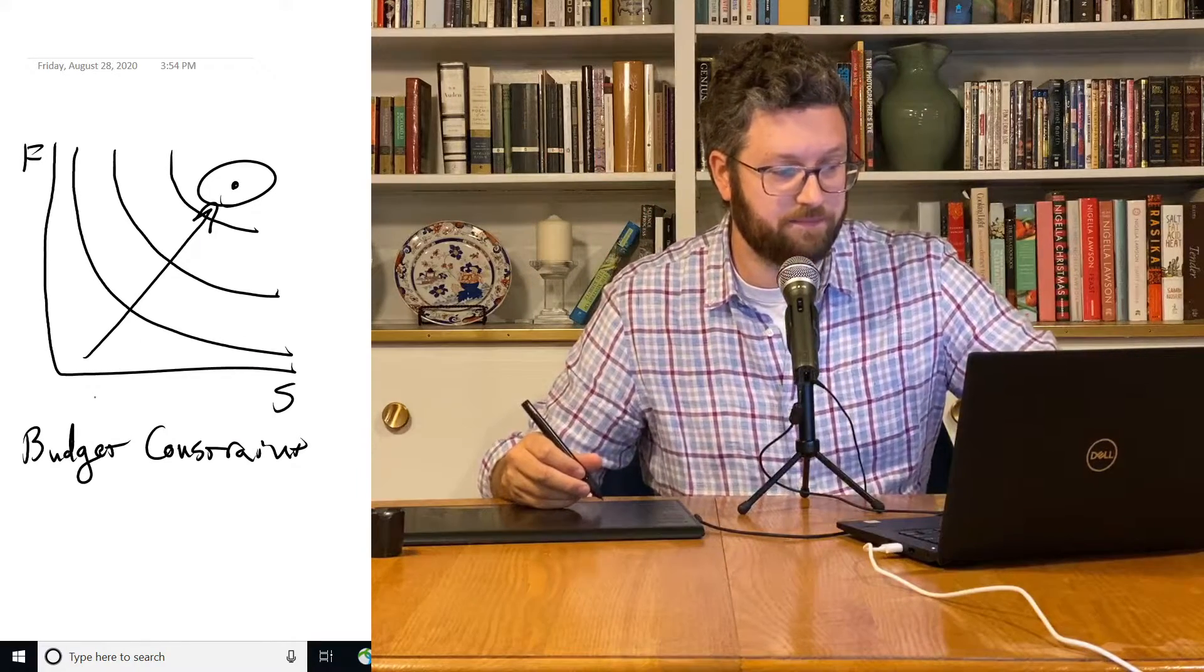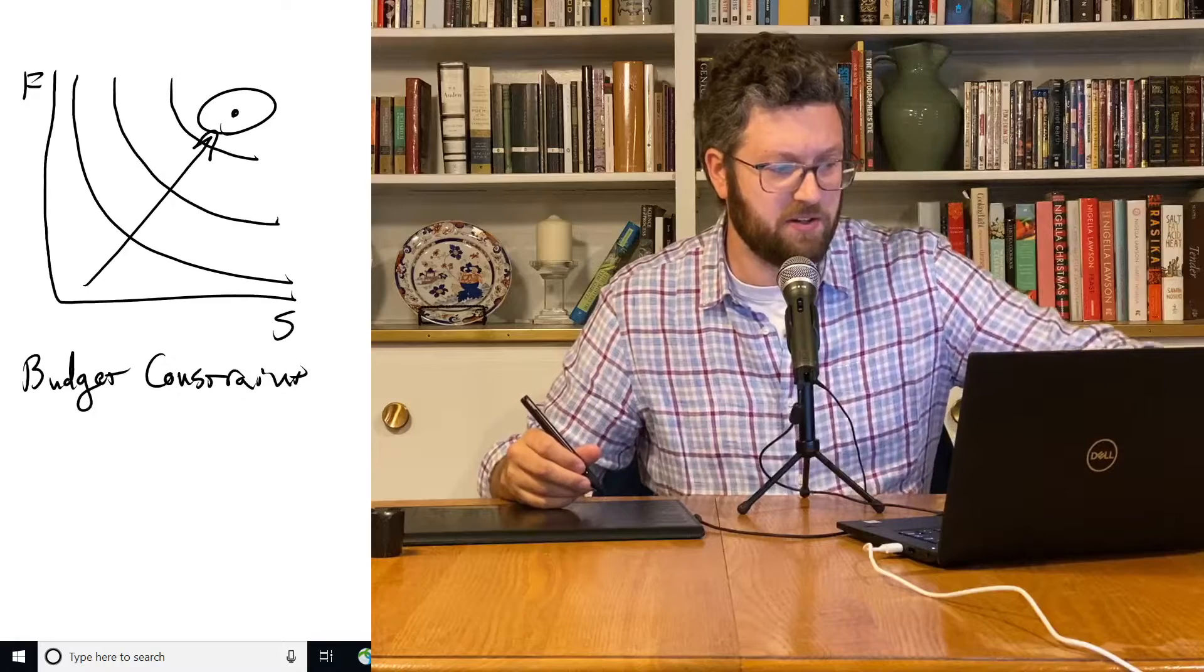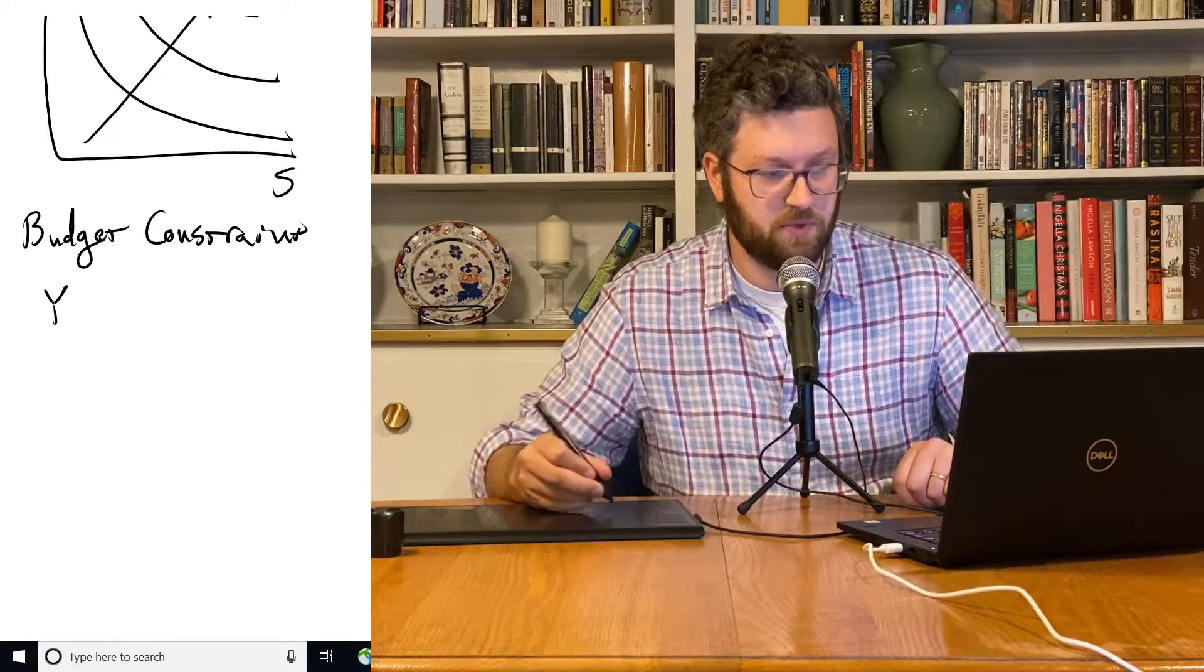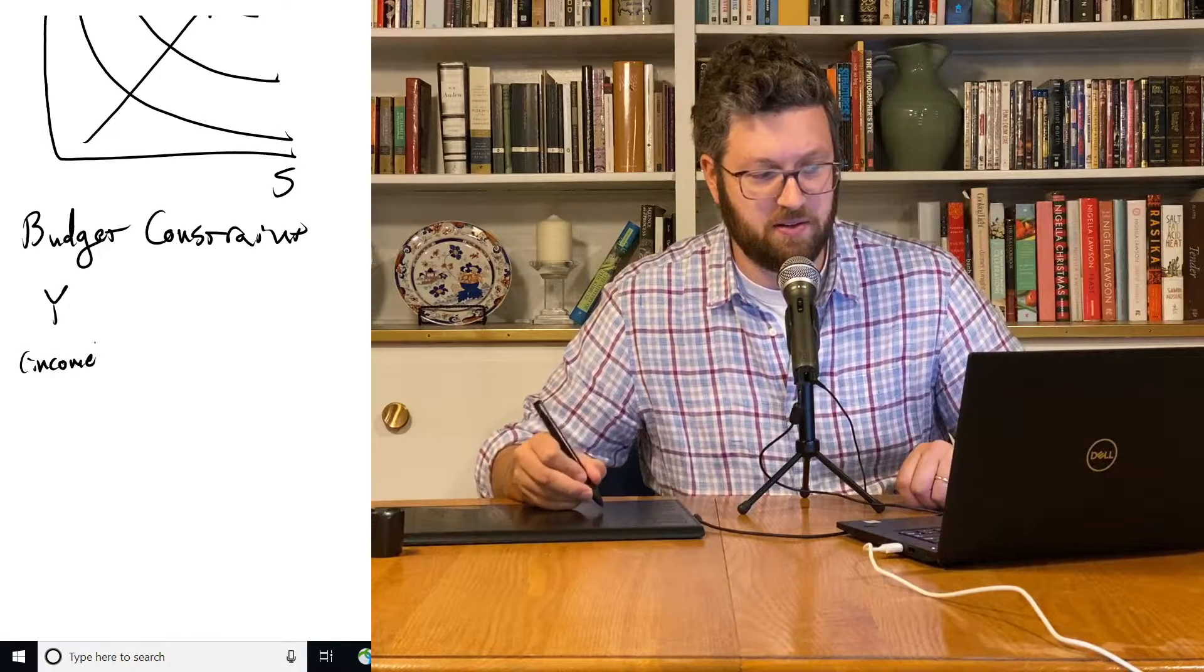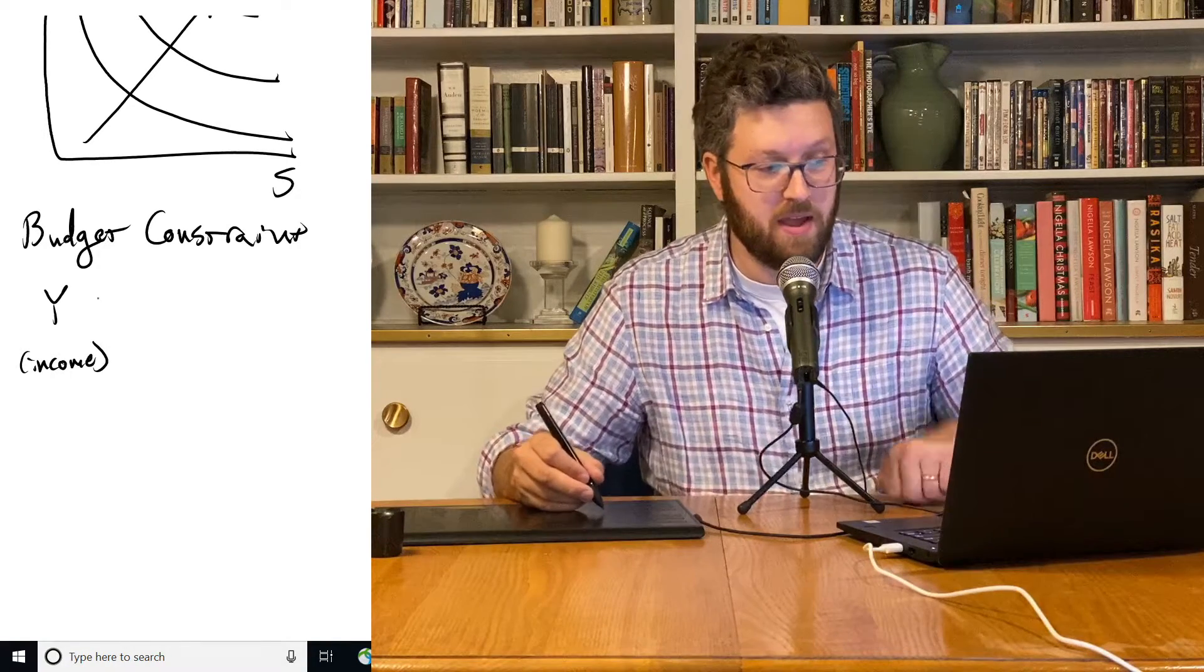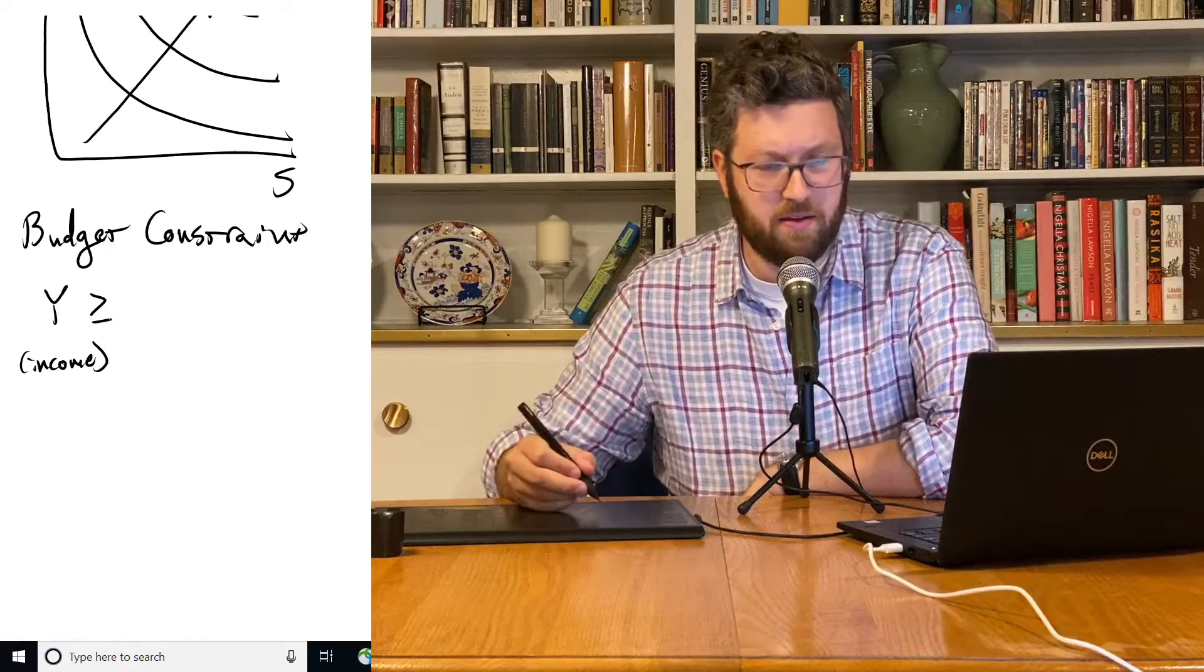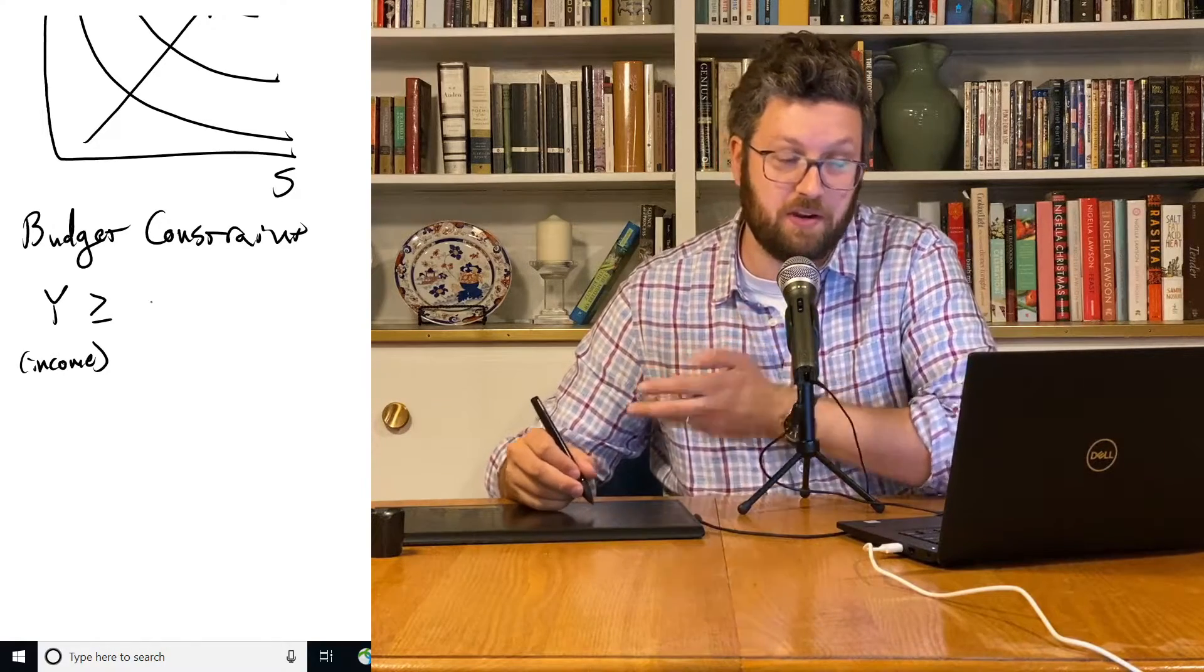So in general, in econ, the budget constraint is written with a Y for the amount of money that you've got to spend. We can call that your income. And that has to be greater than or equal to how you spend your money.